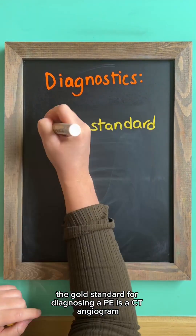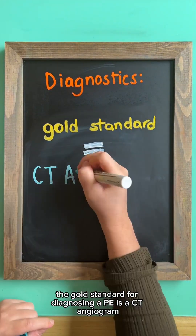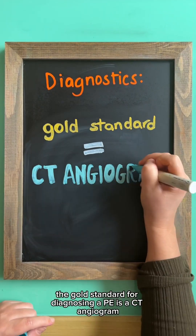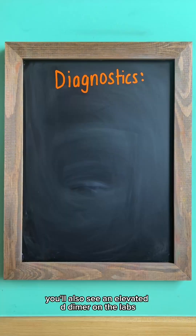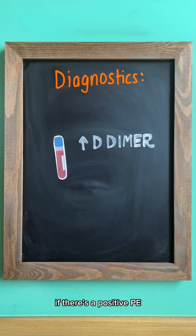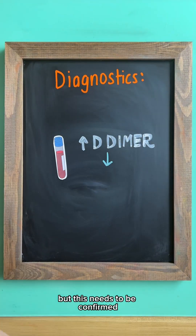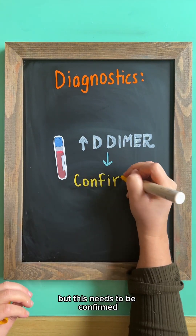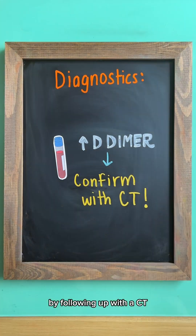The gold standard for diagnosing a PE is a CT angiogram. You'll also see an elevated D-dimer on the labs if there's a positive PE, but this needs to be confirmed by following up with a CT.